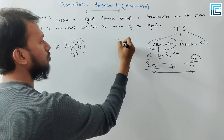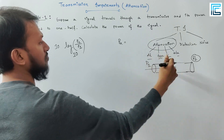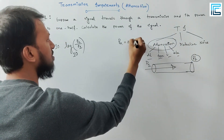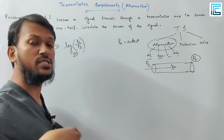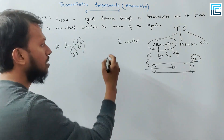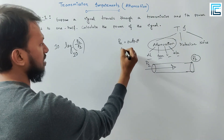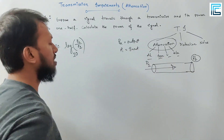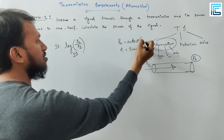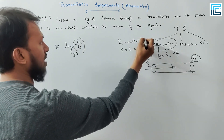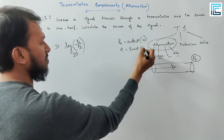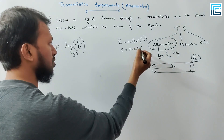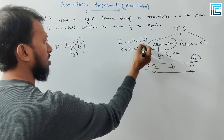Here, P2 is the output power after passing through the medium, and P1 is the input power. In most cases the unit is watts or milliwatts.